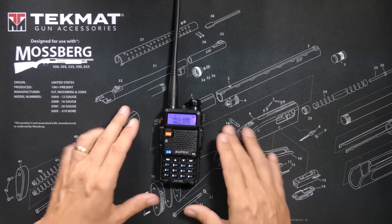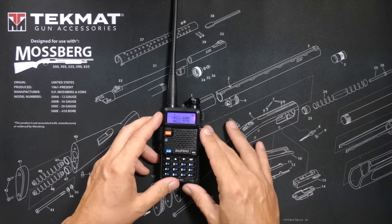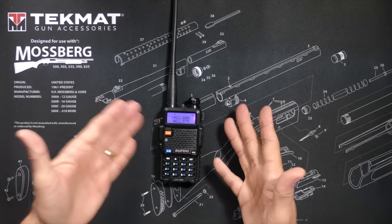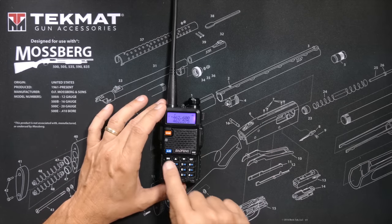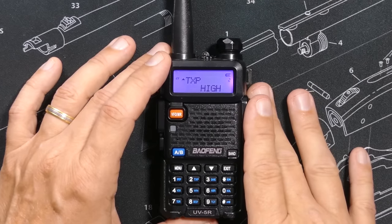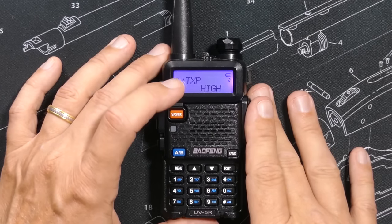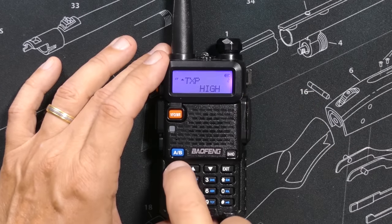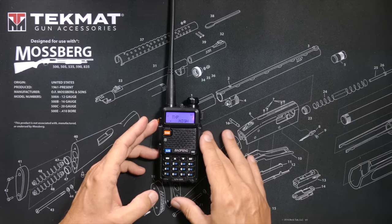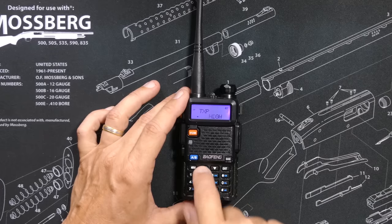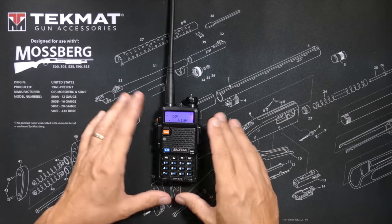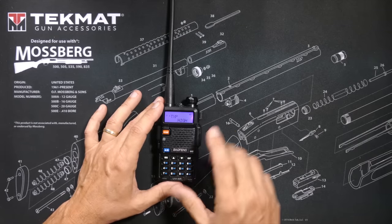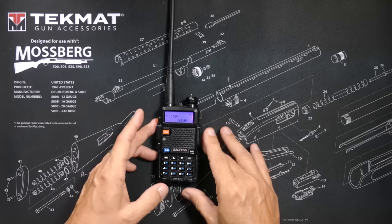The first of the important menu settings that you should know about your Baofeng radio, as determined by me, is menu item number two: TXP. This is the power transmit level. There is a high and a low setting, and some models also have a mid or middle setting. Setting this to low will make your battery last a lot longer.